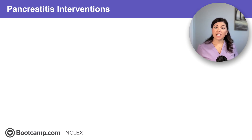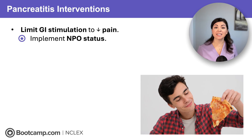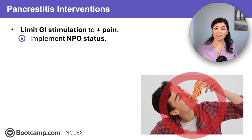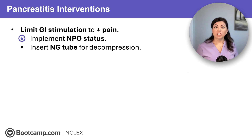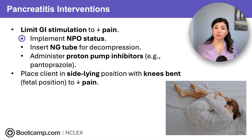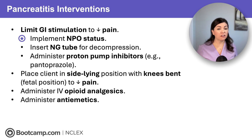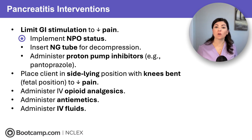For clients with pancreatitis, we want to limit GI stimulation to reduce enzyme release. NPO status is non-negotiable because every bite and sip triggers pancreatic enzyme release. Insert an NG tube for decompression and administer proton pump inhibitors like pantoprazole to decrease acid secretion, which reduces pancreatic stimulation and autodigestion. For comfort, position the client side-lying with their knees bent — the fetal position. Give IV opioid analgesics for pain, antiemetics as needed, and IV fluids for hydration.